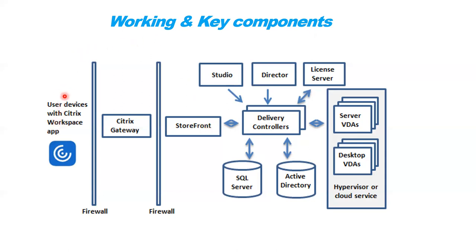Whatever is published to the end user — all those machines get powered on and displayed to the end user. Then that response comes back to Storefront, and from Storefront it goes to the user's laptop or desktop. After clicking login, if everything is fine — Active Directory validates credentials — within a second the user gets the options for the Windows 10 machine or applications published for them. This is a nanosecond process, though it is a long pipeline.